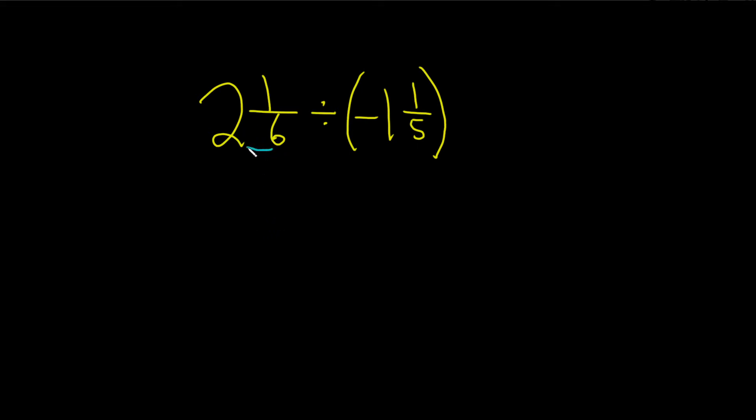We start doing that by multiplying the 6 and the 2. So 6 times 2 is 12. Then you add the top number, so plus 1, and that gives us 13. Then you write it as 13 divided by 6.